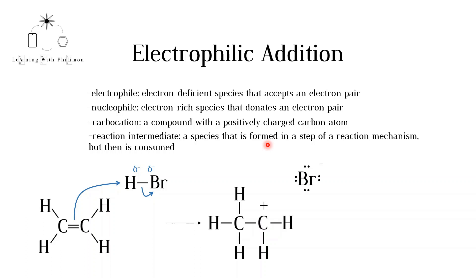In the next step of the mechanism, the negative bromide ion is attracted to the positively charged carbon atom. A lone pair of the bromide ion is used to form a bond with the carbon atom. In this step, the bromide ion is acting as a nucleophile, donating an electron pair. And the carbocation is an electrophile, accepting an electron pair. Note that the double headed arrows in organic chemistry always start at electrons and end up at nuclei.